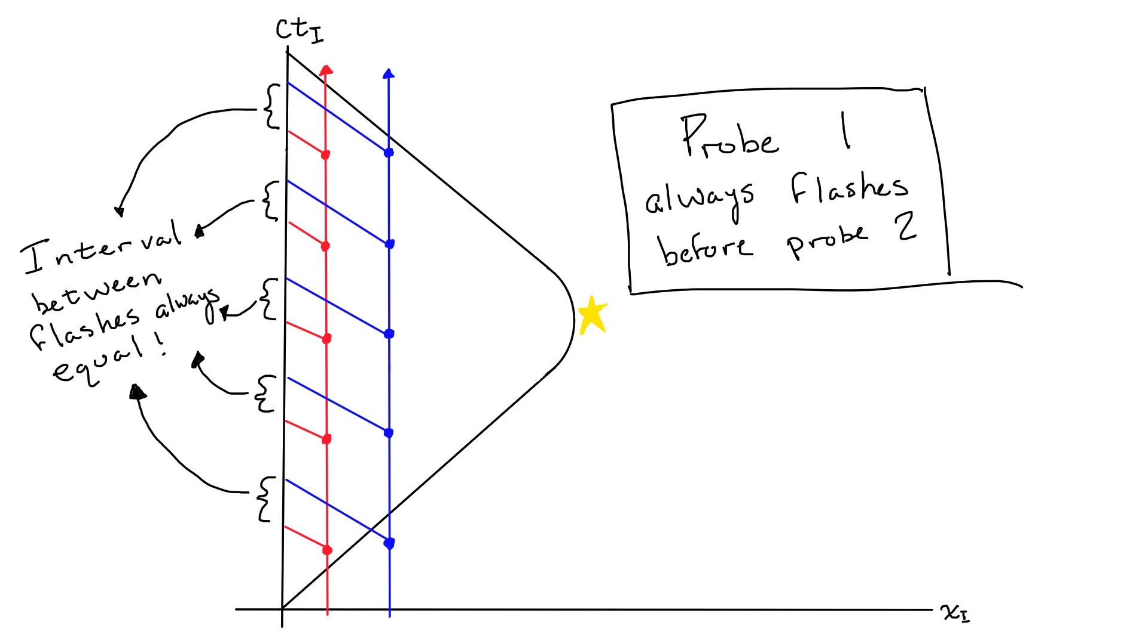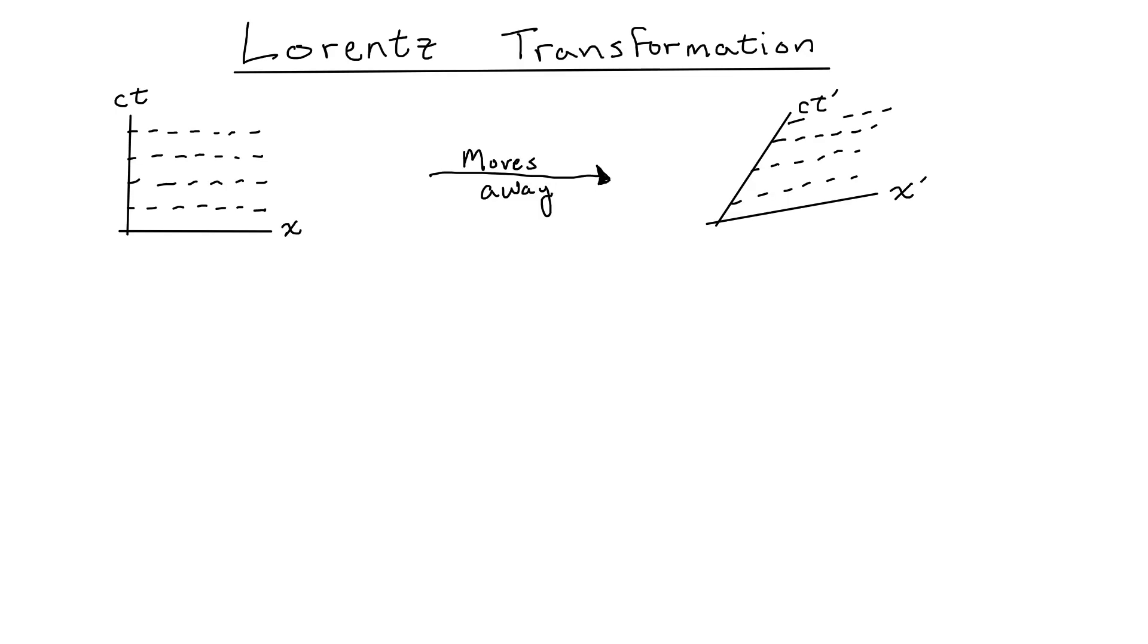The Lorentz transformations tell us that as he moves away from Isaac with a constant velocity, his lines of constant time will get slanted upwards. Similarly, as he moves towards Isaac, his lines of constant time get slanted downward.